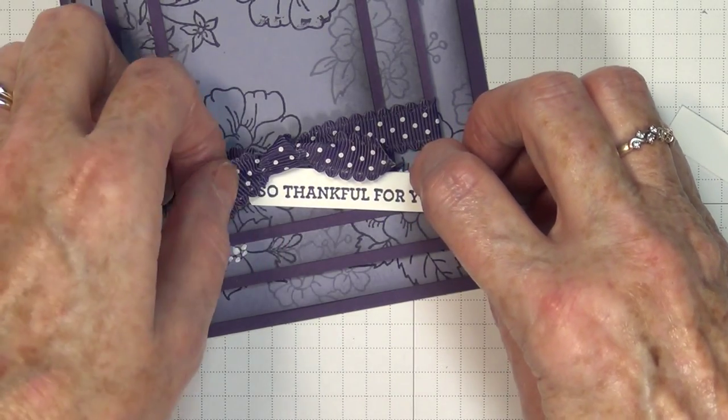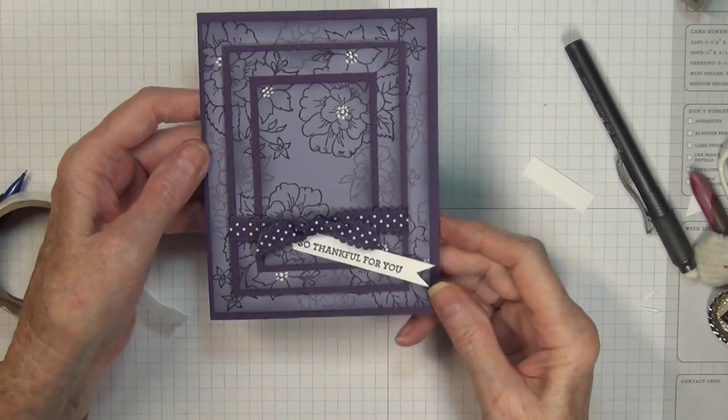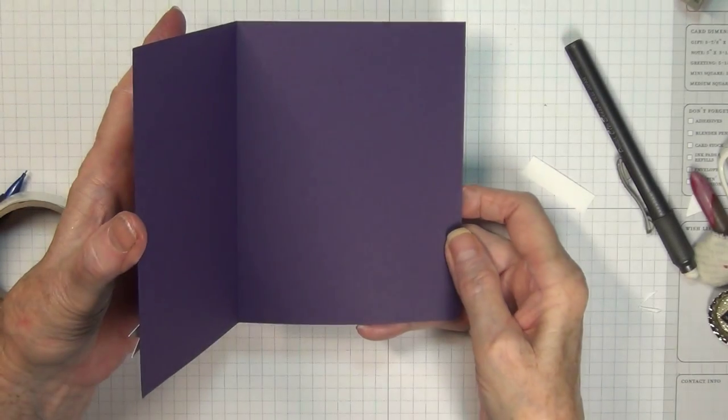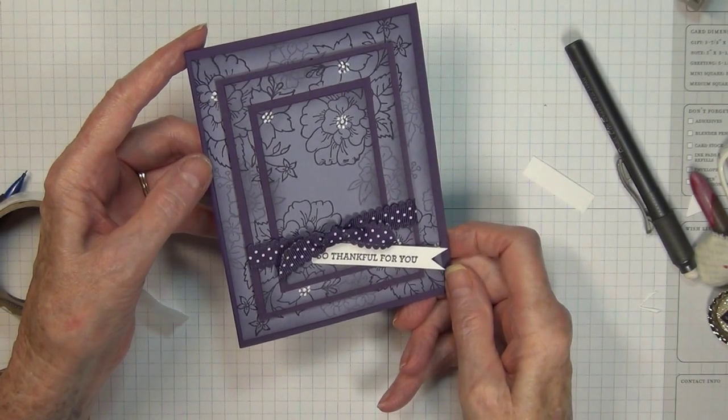The only thing that's missing is we need to do something to the inside. So I'm going to talk more about masking. Come back for my next video and we'll be finishing up the inside of this card. Thank you and until next time.